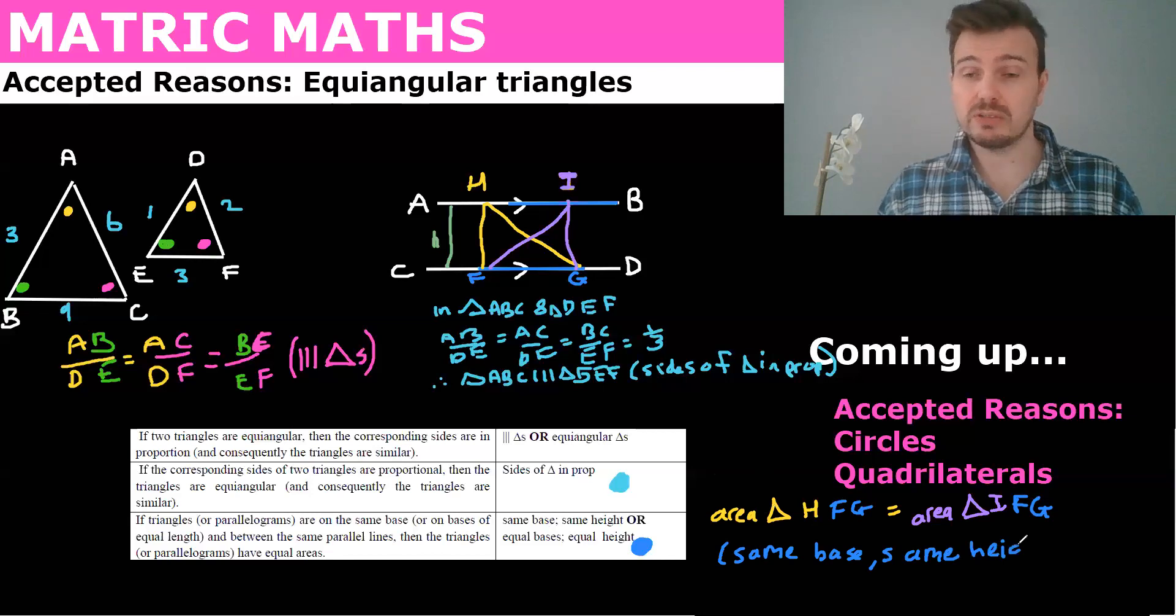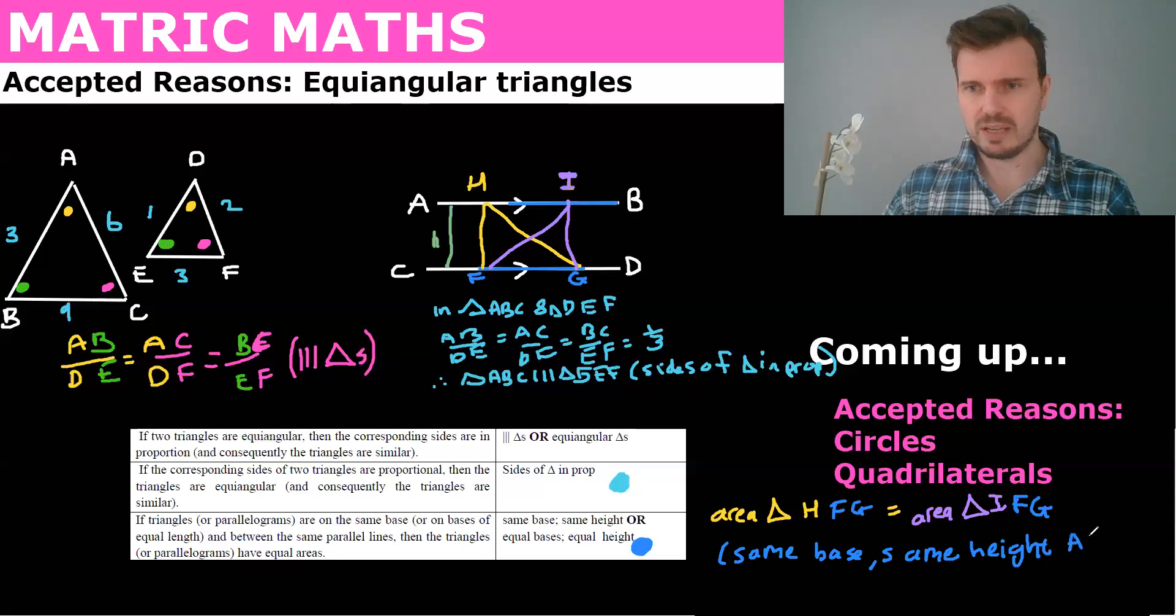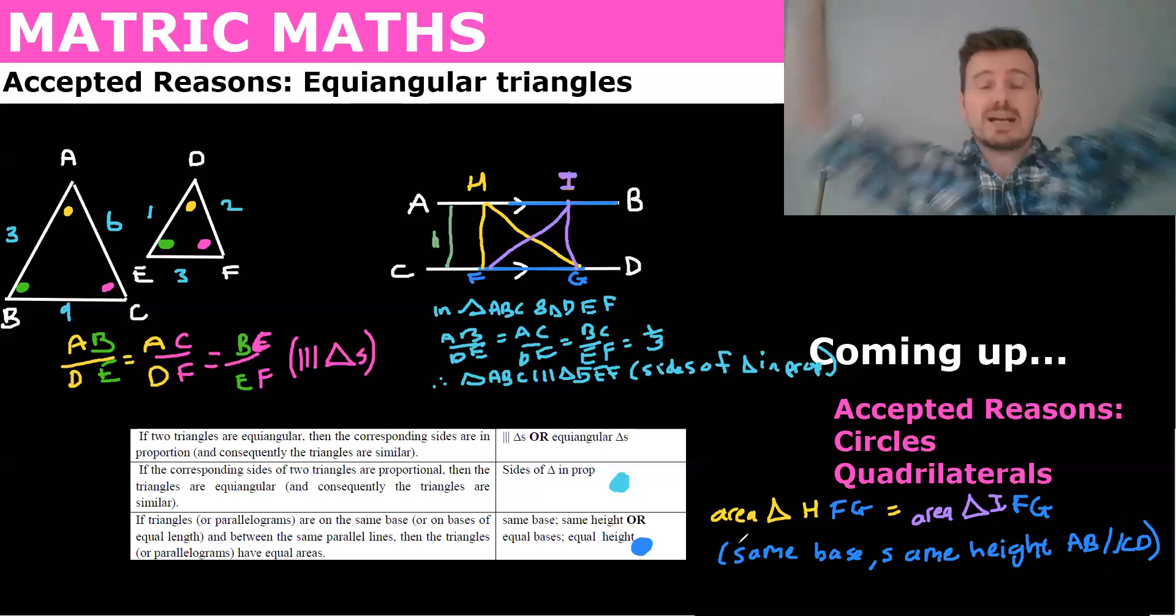And what I want to do is just to be sure, because we actually needed to do this when we proved our prop theorem, which was our fifth proof that we needed to know, is you also quoted the parallel lines just so that they know. So it's not here, but I would recommend that you quote the parallel lines as well, just so that they can see why you're doing this. Okay, so that's triangles done and dusted.